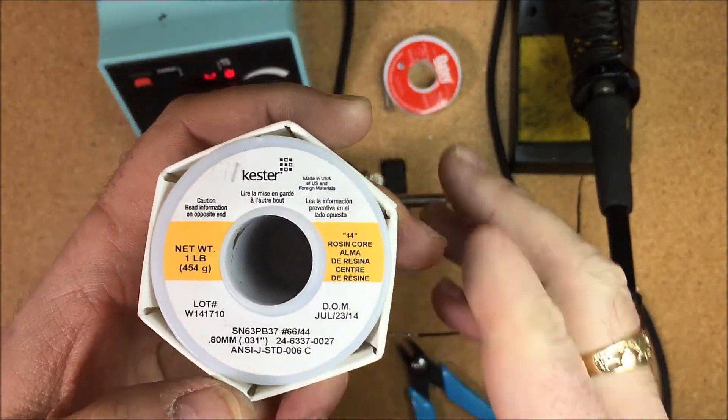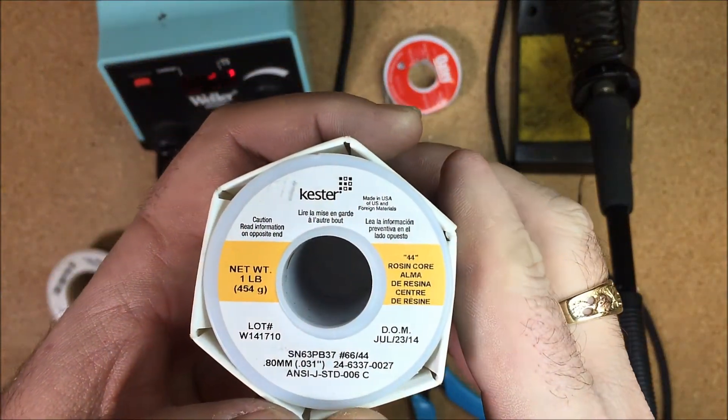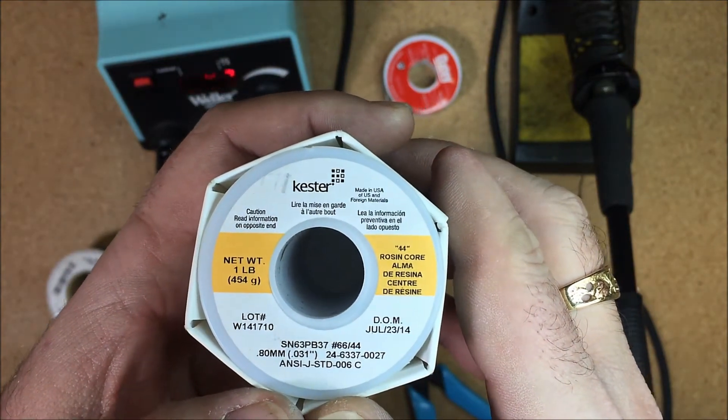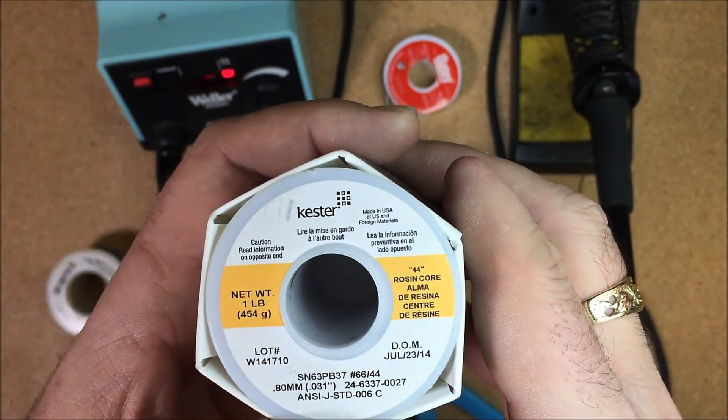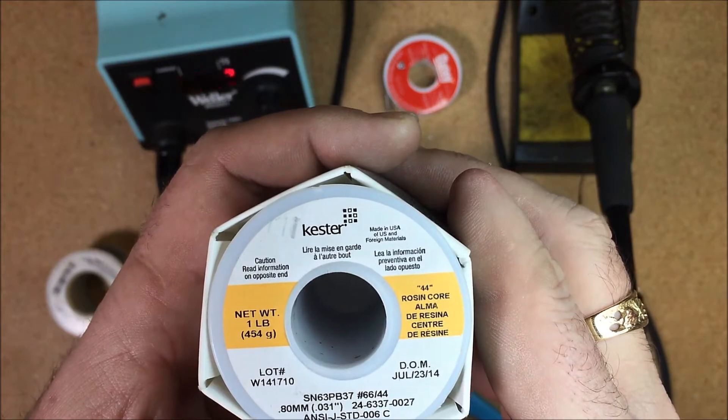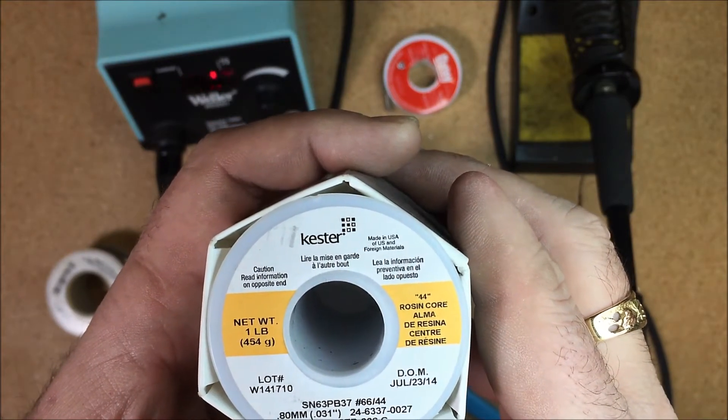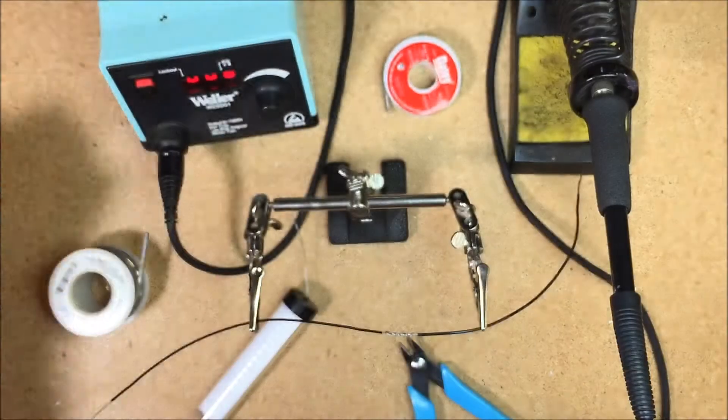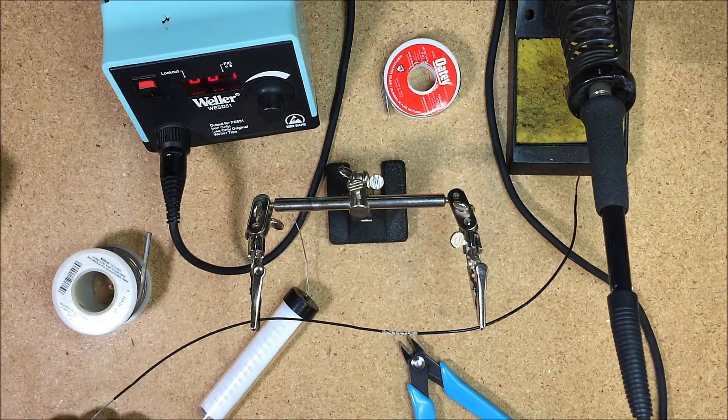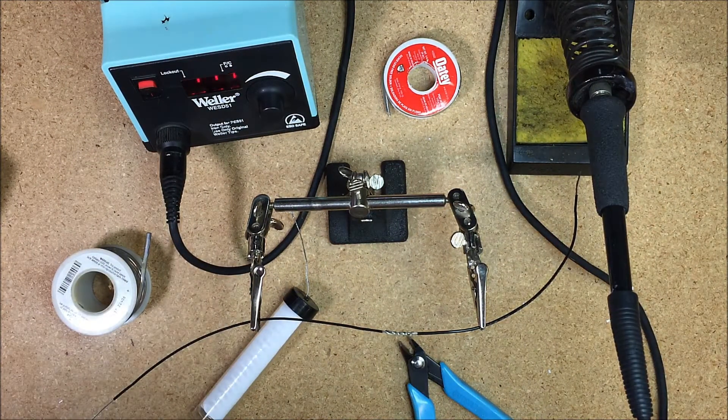If you look at it, you can see it's .31 inches in diameter, and I'll show you in a second here why this size is nice to have so small. Also, approximately 66/44 solder.